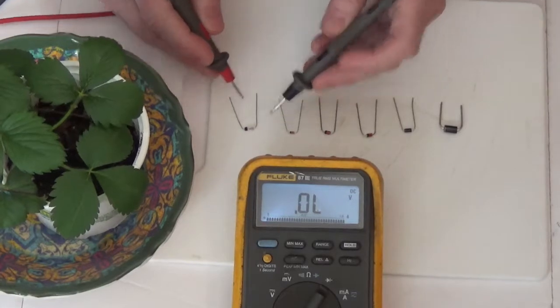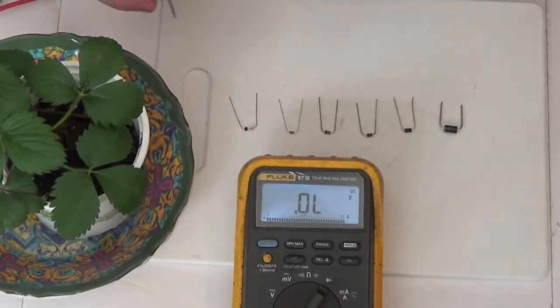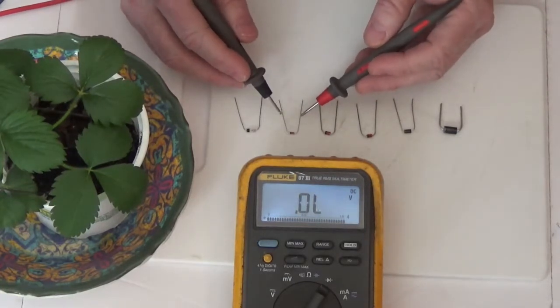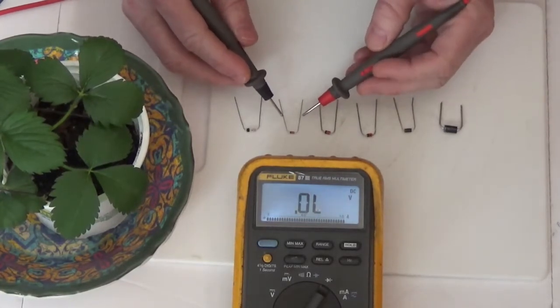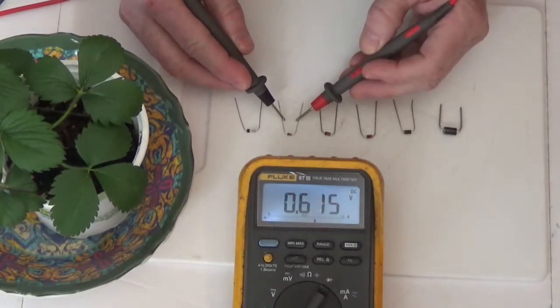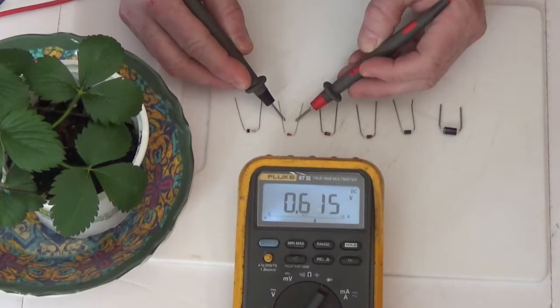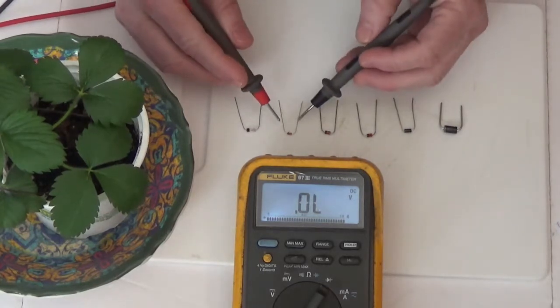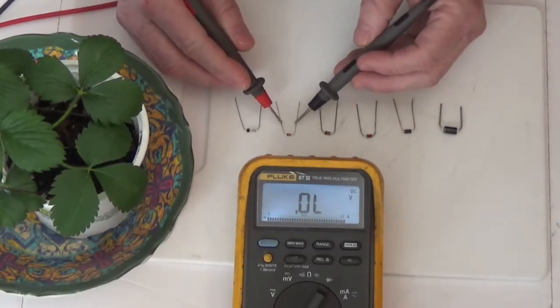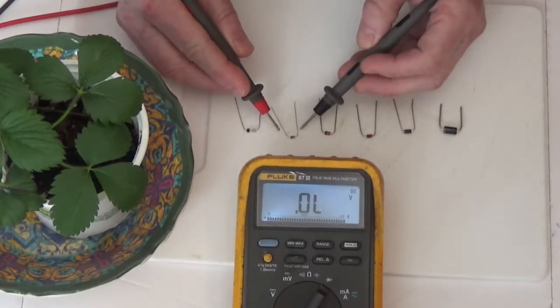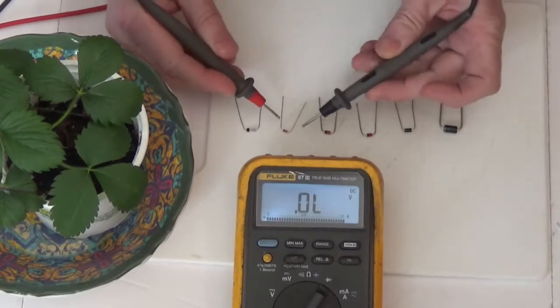Now we're going to come over here and look at the 1N4148 small signal diode. We have a diode drop of 0.615. That's your standard diode drop, they always average out to about that right there. Reverse the leads and I have no diode drop right there.